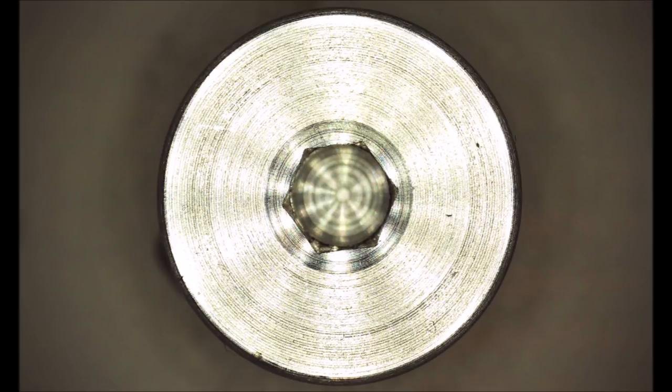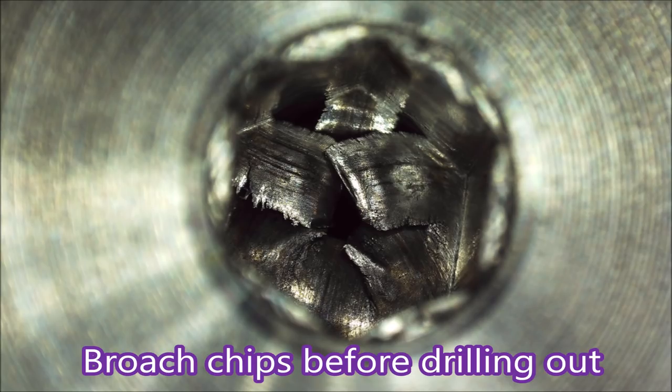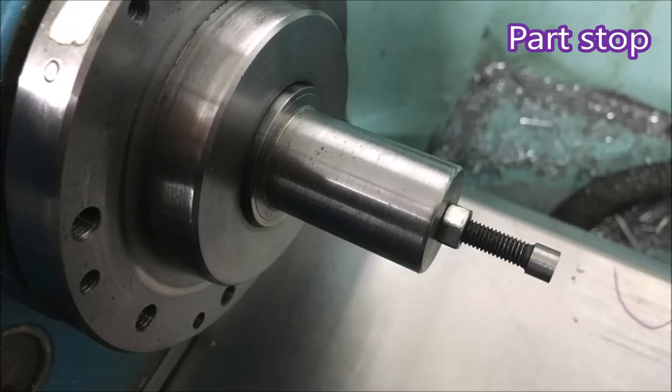There you can see the hex right down to the bottom of the hole. There's the swarf that the rotary broach makes, which is why you go all the way in with the drill.